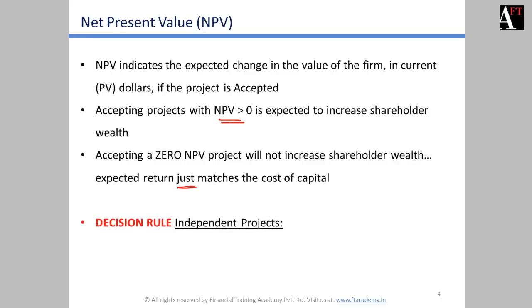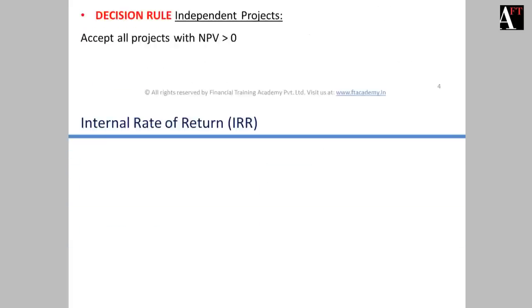The decision rule for independent projects is to accept all projects with an NPV that is positive, or greater than zero.